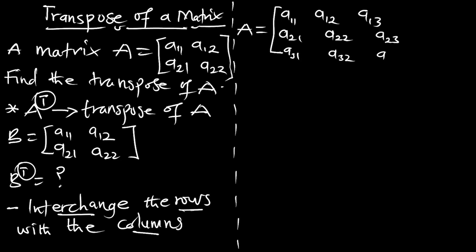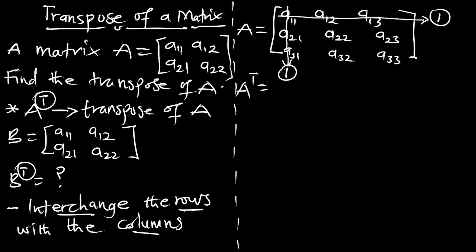So if we have a matrix A with elements up to A33, and we are to find the transpose written as A superscript T, we are going to interchange or replace the rows with the columns. These are the rows — row one and column one. The transpose means column one is going to replace row one: A11, A21, A31.